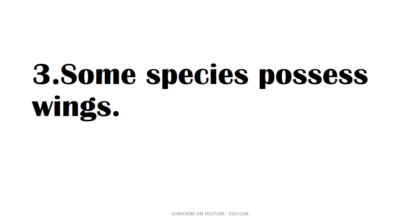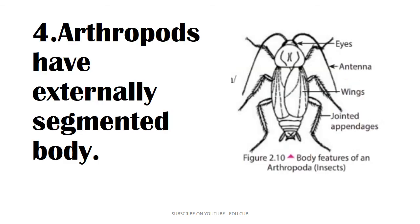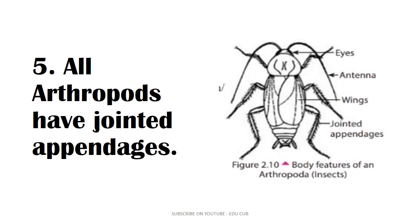Some species of arthropods possess wings. Arthropods also have an externally segmented body — you can see the body is segmented in the picture. All arthropods have jointed appendages; all of their appendages are jointed.